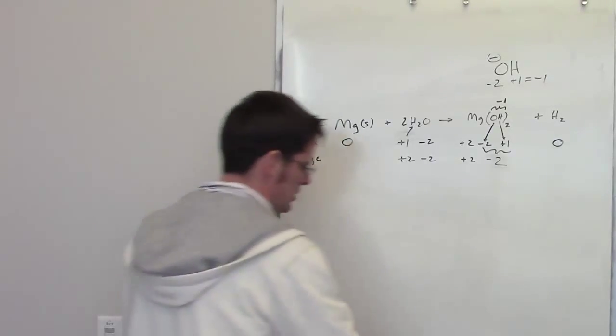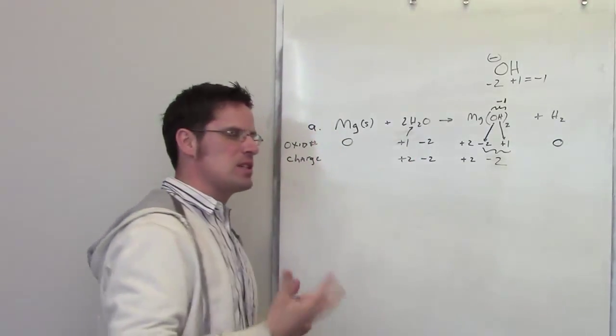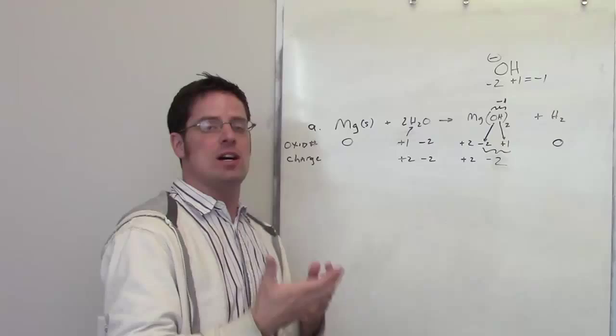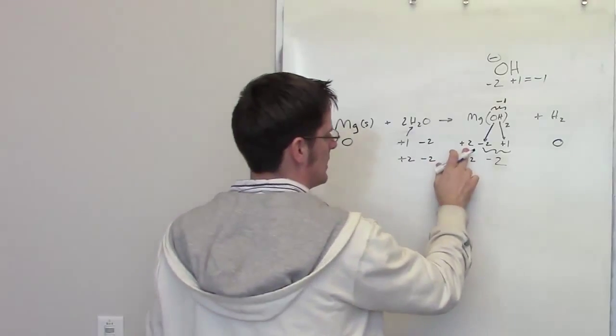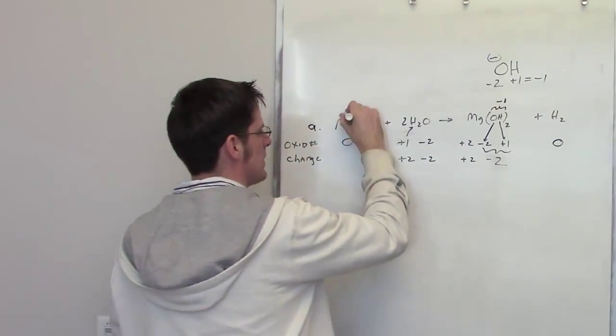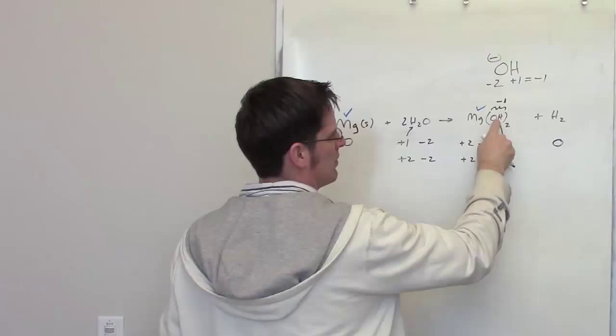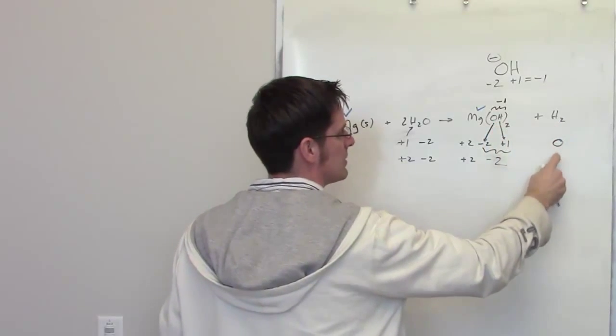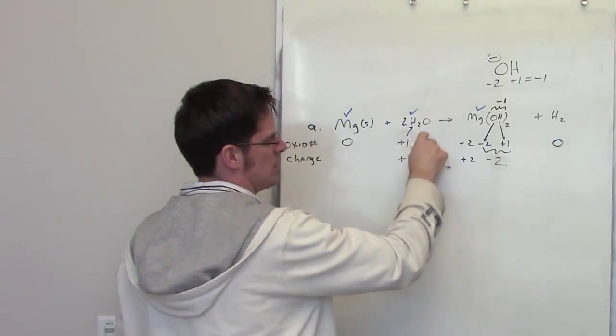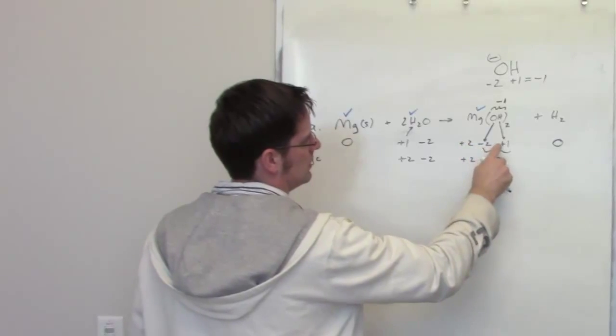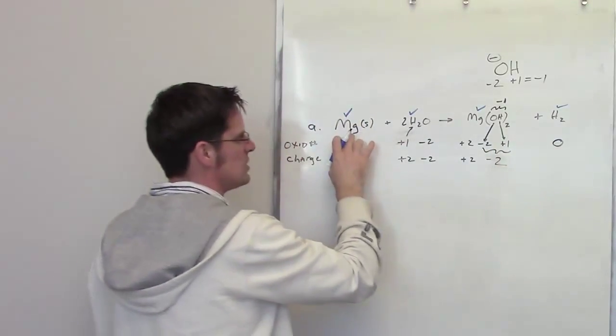So now what we have to do is determine what has been oxidized, what has been reduced. What I do is I go from left to right, and I ask myself the question, has anything had its oxidation number changed? Magnesium on the left has an oxidation number of zero. On the right, it has an oxidation number of plus two. So magnesium has been changed. Hydrogen here has oxidation number of plus one, and hydrogen over here is still plus one. But hydrogen over here, zero. So some of those hydrogens have indeed changed. Oxygen goes from an oxidation number of negative two to an oxidation number of negative two. So oxygen stays the same. So these are the things that change: magnesium and hydrogen.